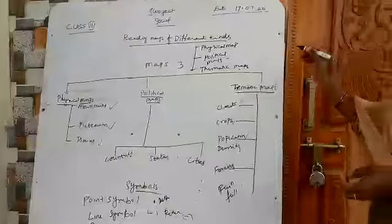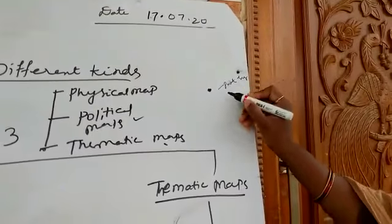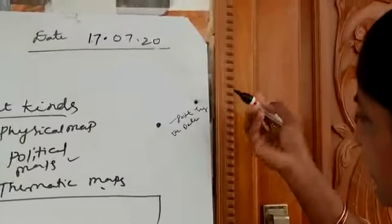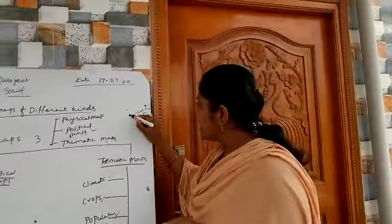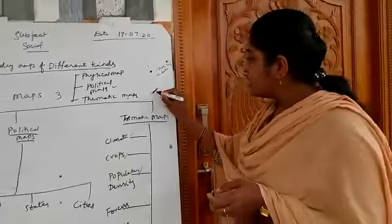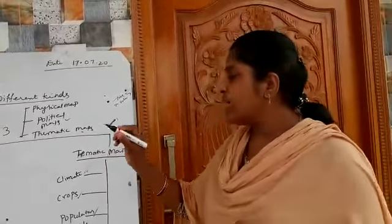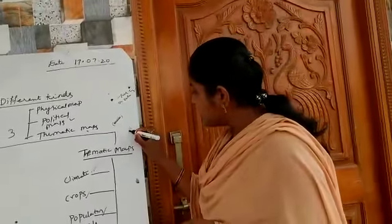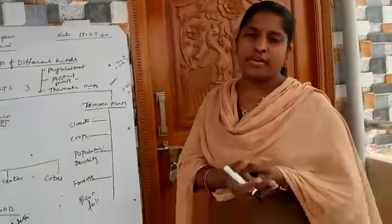And the symbols — what are the symbols? This is the point symbol — for example, Delhi, places like that. This is Russia — like that, places we can write, using point symbol. And the next one is the line symbol — rivers like this. Line symbols. Where are the Brahmaputra, where are the Krishna — where the rivers are, we can identify by a line. And the next area symbols — area symbols like these. For example, forest. Some places we can identify very easily.